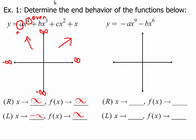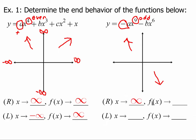For the second problem, the leading coefficient is negative, which tells me the right side points down. The highest degree is odd, and odd tells me they point in opposite directions. So if the right is going down, the left is going up. On the right, as x goes to infinity, y goes to negative infinity. On the left, as x goes to negative infinity, y goes to positive infinity.